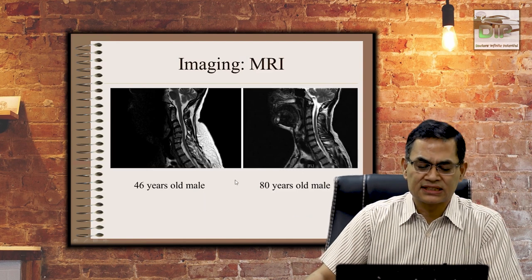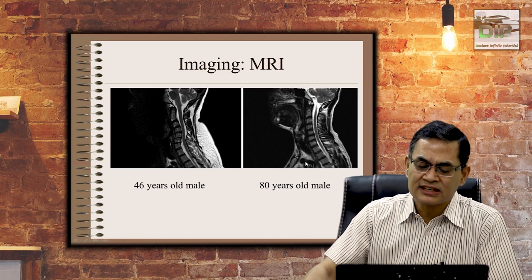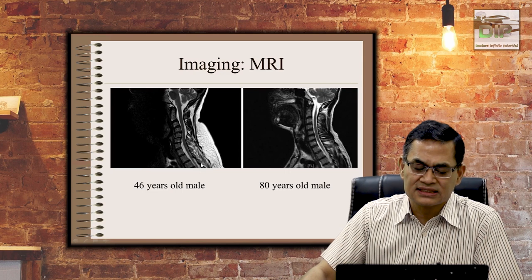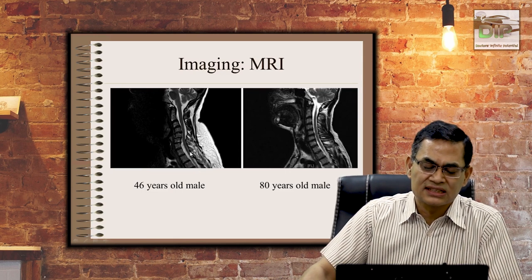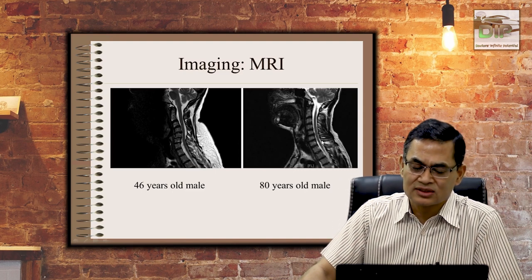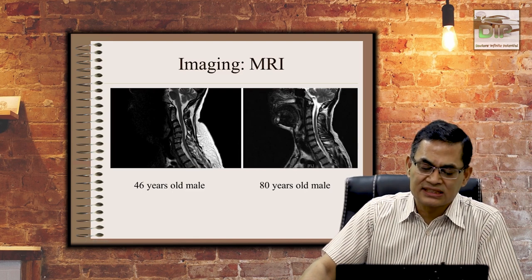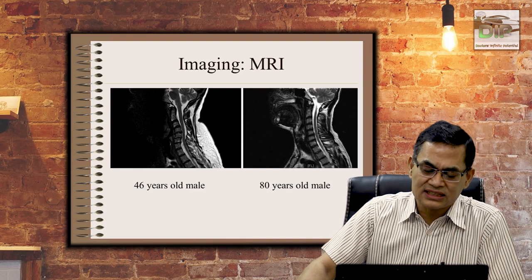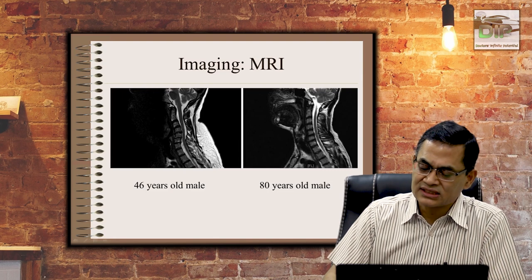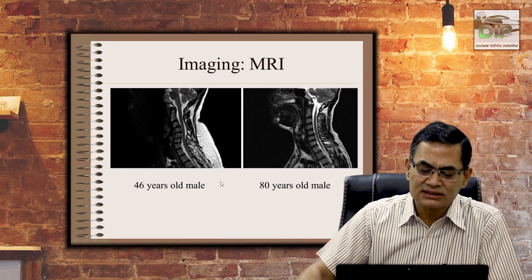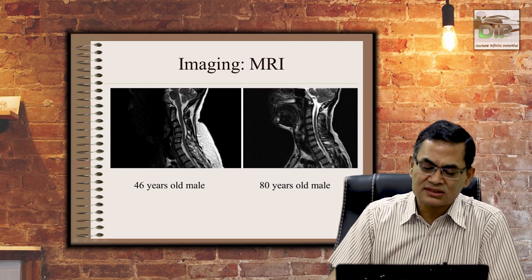These are MRIs of two patients of different ages — one is 46 years old and the other is 80 years old. The features on the left side are more severe despite that patient being younger, which means that imaging findings have no bearing on age. Even if you are elderly, you may have minor features; even if young, you may have severe features. Importantly, MRI reveals cord compression which is not visible on X-ray.